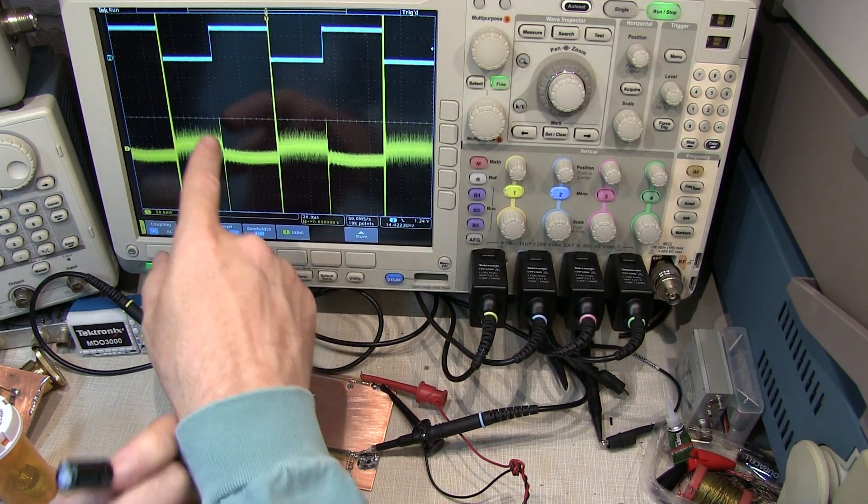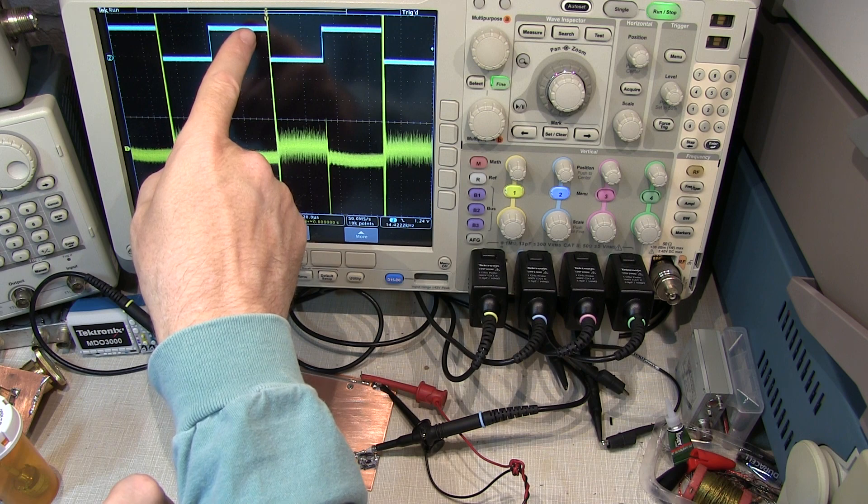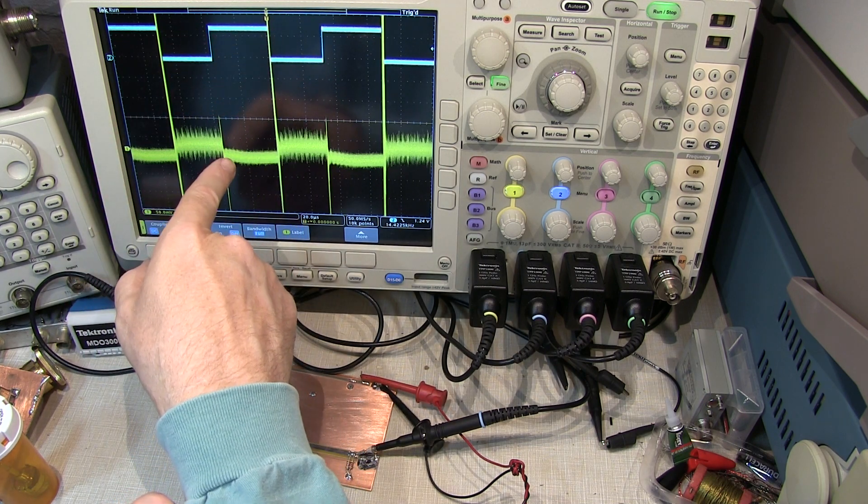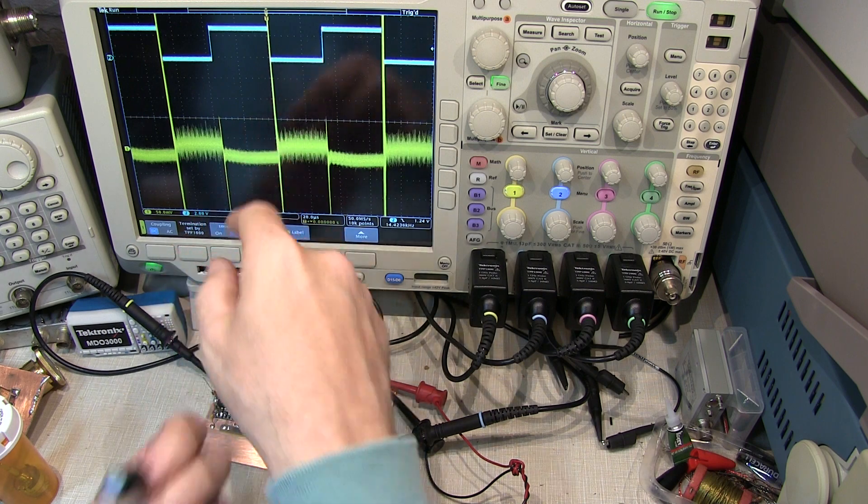So we can actually see that when we're driving up the transmission line, we're pulling an extra 60 milliamps through the supply, and that's causing a little bit of a dip in the supply voltage, and then it releases back up again.